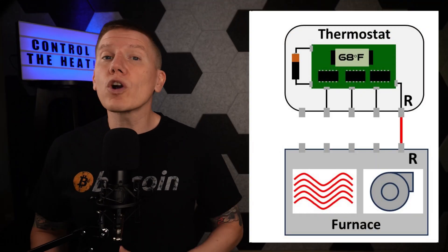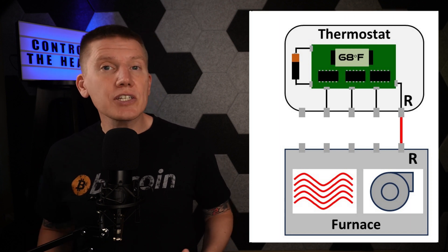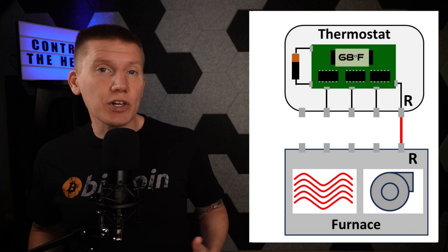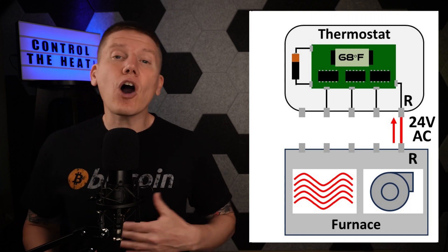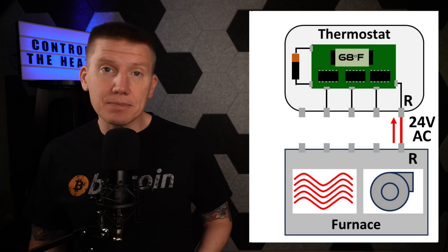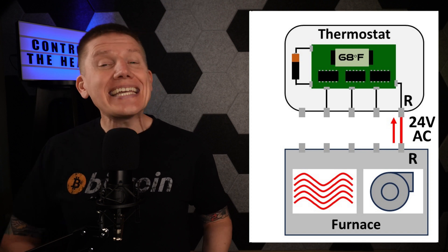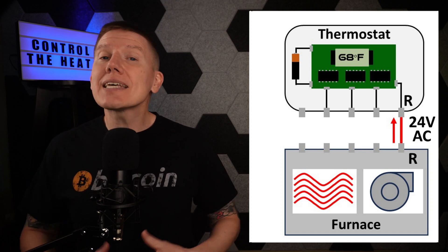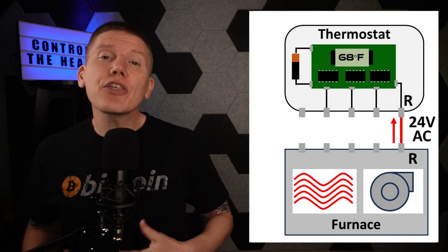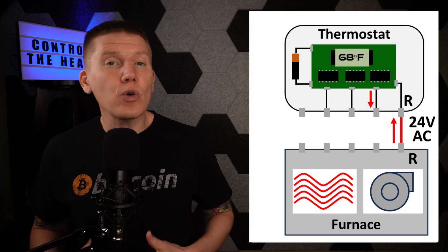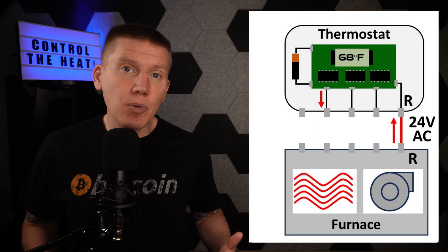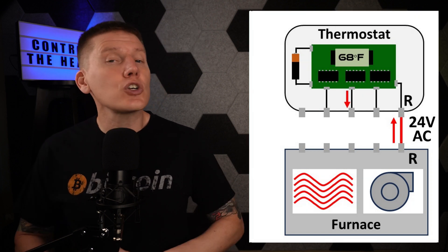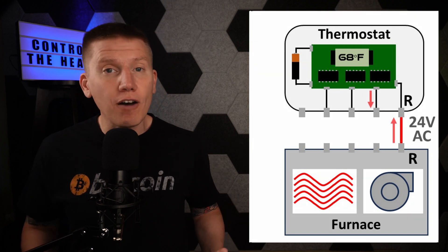The first of these four wires is the R or red wire. The R connection on the furnace is the source of the 24-volt AC power used to control the furnace and other parts of the HVAC system. This 24-volt source is sent to the thermostat, which has a matching R terminal, and the thermostat then routes that 24-volt AC power to the other wires going back to different components of the HVAC system, controlling what gets turned on and off.